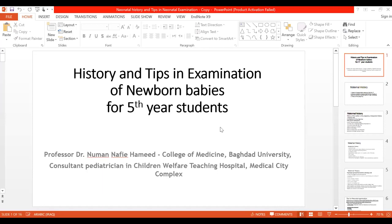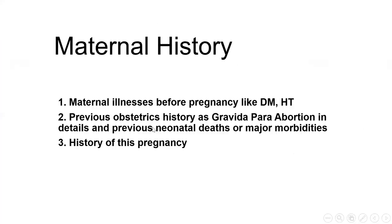First, we should take the history of the mother for any illnesses before being pregnant, like diabetes or hypertension or other conditions. We should take previous obstetric history — whether the mother is gravid for the first pregnancy or she is multi, including the number of pregnancies, parity, and any previous abortions.